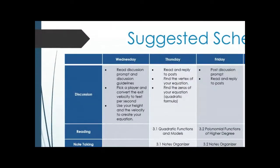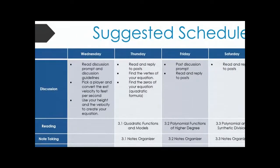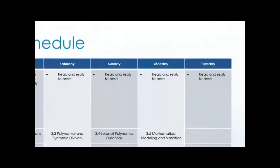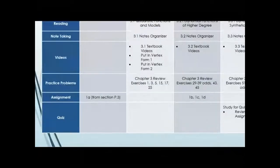For scheduling: you can start working on the discussion today — you can pick your player, figure out the height, and even find the zeros today since that's just from 1.4. Otherwise you can wait until finishing 3.1 to do the vertex and zeros. There are examples in 3.1 covering both of those. The first question on the assignment — 1a — is actually vocabulary from P.3 when we learned about polynomials, so if you don't remember that you can go back to P.3.